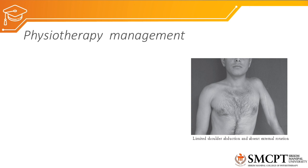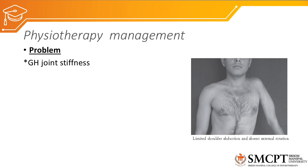For physiotherapy management, one problem will be glenohumeral joint stiffness because the patient is unable to perform abduction. As seen in the picture, when abduction is attempted there is increased superior translation due to activation of deltoid, which is a translatory muscle for the glenohumeral joint, whereas supraspinatus is a rotatory muscle. The rotatory component is lost, causing upward translation.